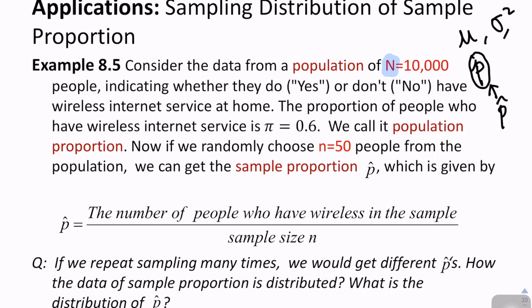Indicating whether they do (yes) or don't (no) have wireless internet service at home. So the proportion of people who have this service is π equals 0.6, that is to say, the population proportion, this is equal to 0.6, 60%, so we call it population proportion.